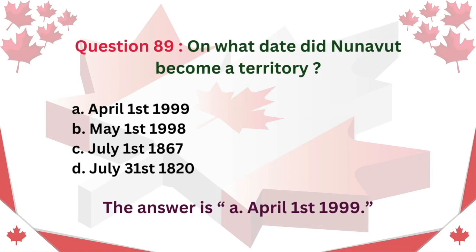Question 89. On what date did Nunavut become a territory? A. April 1, 1999 B. May 1, 1998 C. July 1, 1867 D. July 31, 1820. The answer is A. April 1, 1999.